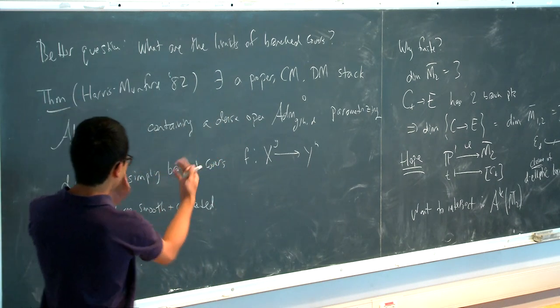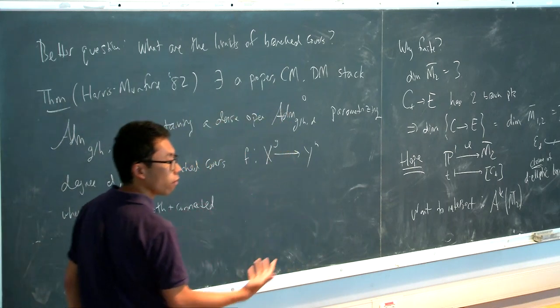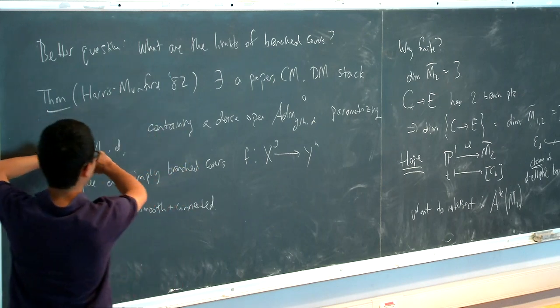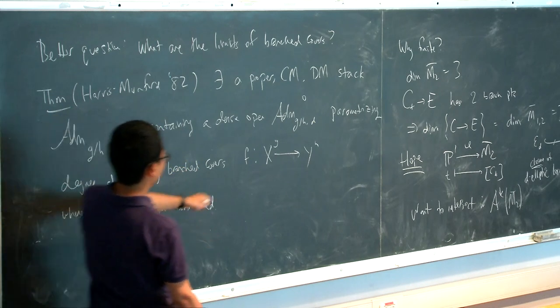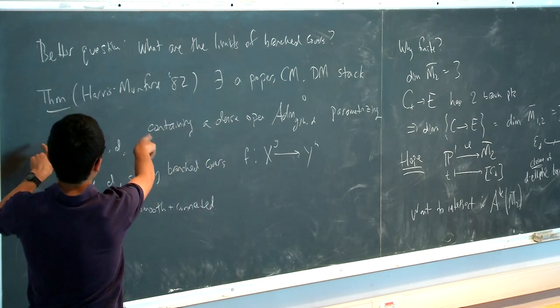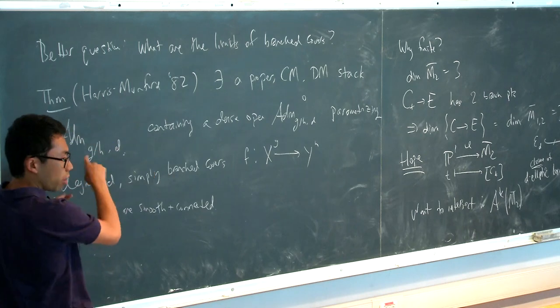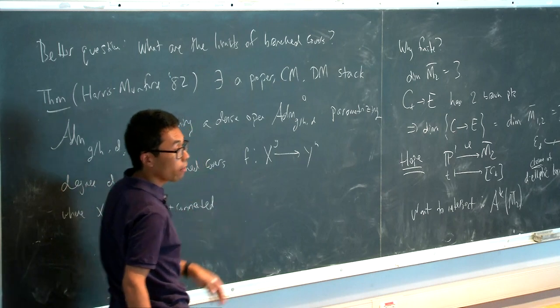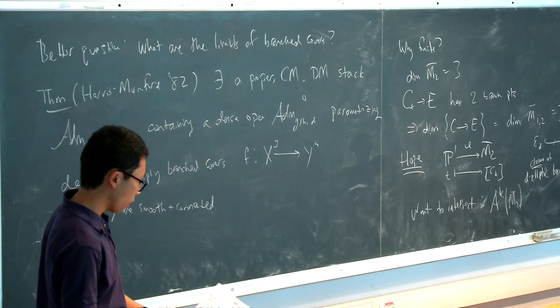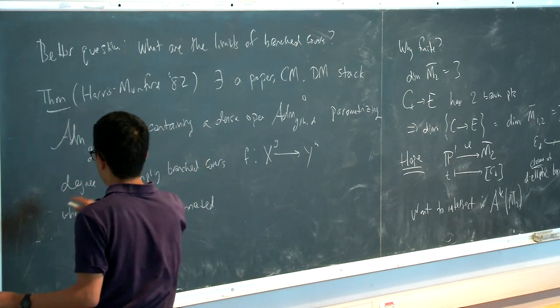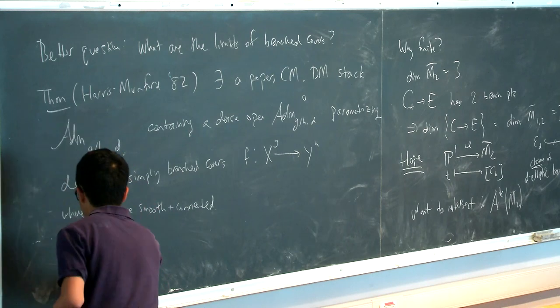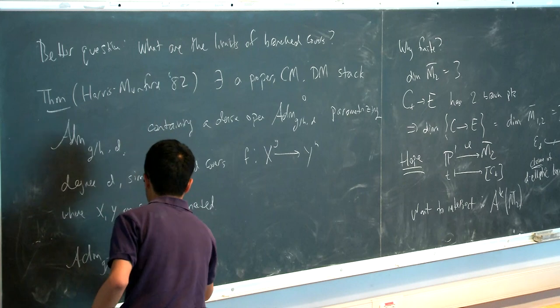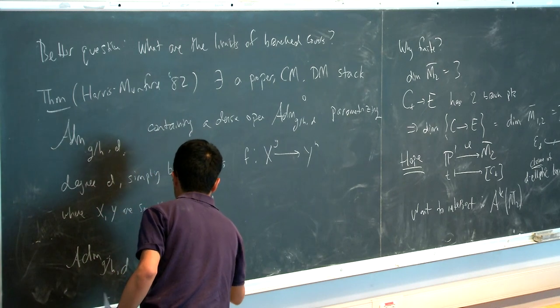So I have this open substack of nice objects, of honest covers of curves. And what Harris and Mumford do is they compactify it. So this is some kind of open stack. And then they give some bigger moduli space that allows these things to degenerate. So what are these parametrizes? This compactified stack parametrizes something called admissible covers.